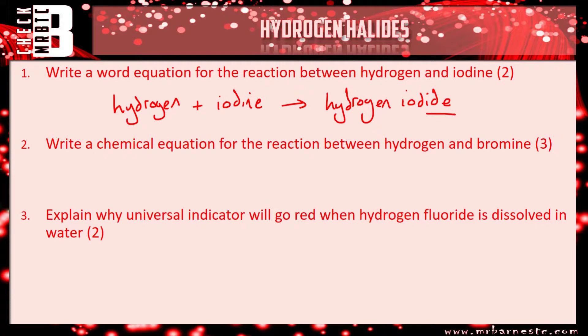The chemical equation for the reaction between hydrogen and bromine: we've said hydrogen is diatomic, so H2. You should know that bromine is a halogen, therefore that's diatomic as well, and you only need one of each to make your hydrogen bromide. However, I've got two bromines and two hydrogens on the left, therefore I need to put a two in front here. So you get one mark for your reactants, one mark for your products, and one mark for your balancing.